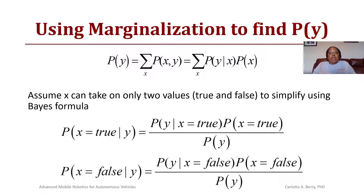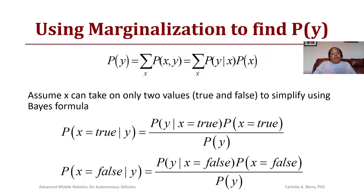Assuming we only have two values for X — true and false — to simplify Bayes' formula: the probability that X is true given Y is the probability of Y given X is true, times the probability that X is true, divided by the probability of Y. Similarly, the probability that X is false given Y is P(Y|X=false)·P(X=false) divided by P(Y).